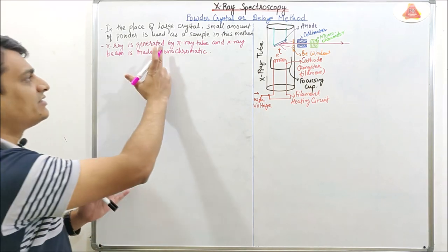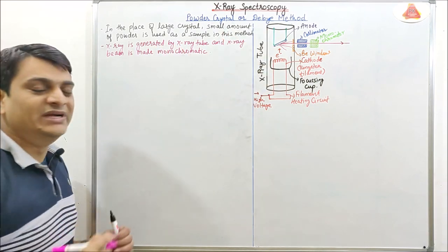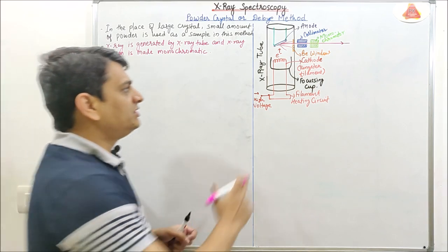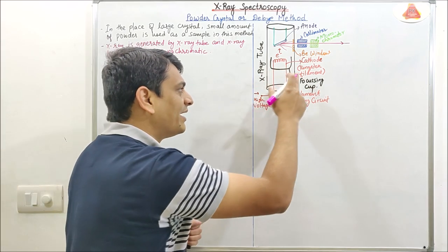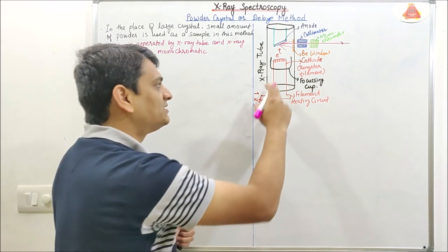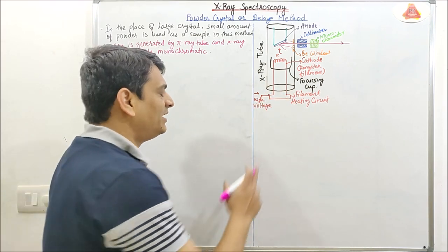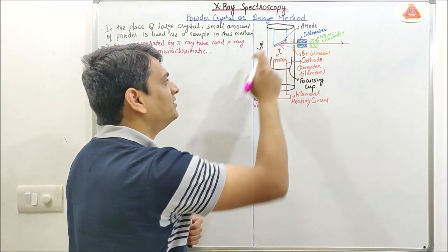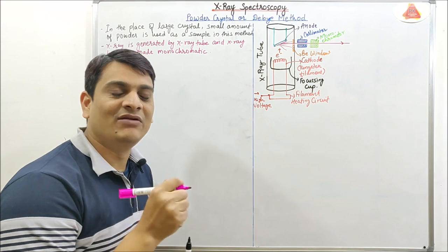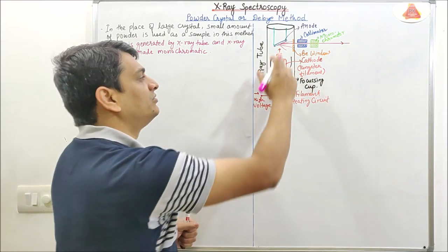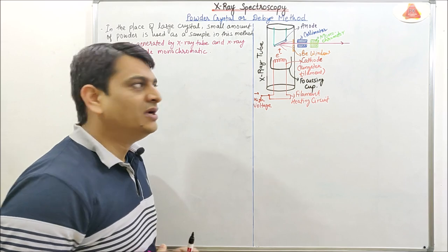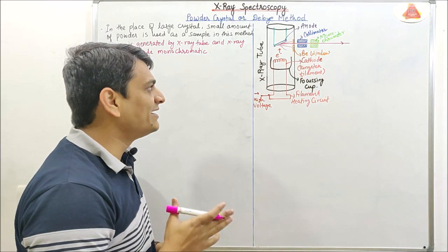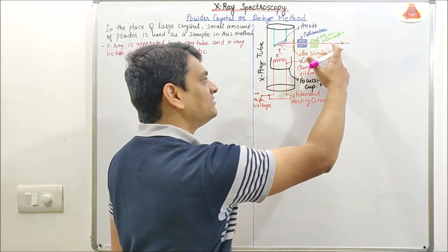X-ray is generated by an x-ray tube. The x-ray beam is made monochromatic. Here cathode is present, and in the cathode a tungsten filament will be present. This tungsten filament will be heated by using high voltage, so it will emit electrons. Those electrons will hit the anode and ultimately form x-rays. This x-ray will go towards the collimator, then through the monochromator. After this processing we will get the monochromatic beam of x-ray.